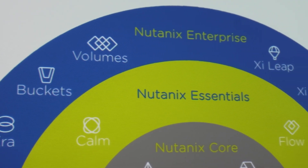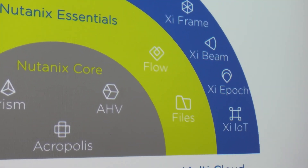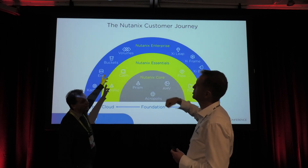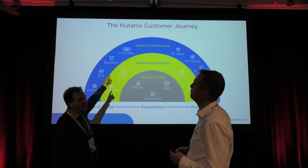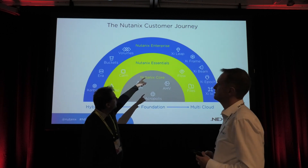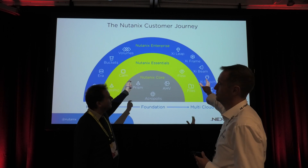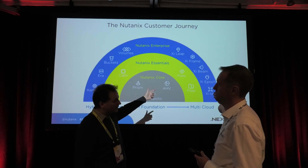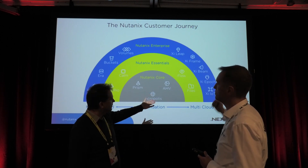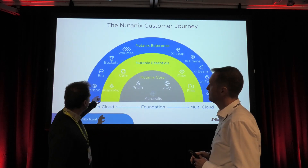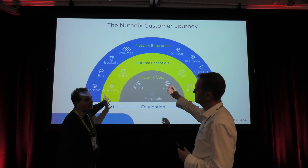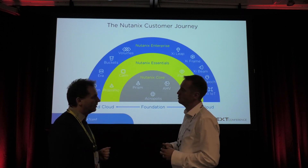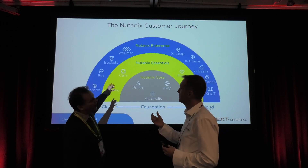Now let's map those services to Nutanix product names. Karbon is containers. Era is databases as a service. Objects is object storage. Volumes is block storage — the SAN solution. Leap is disaster recovery. Everything with 'Xi' is cloud-related: Xi Leap is disaster recovery, Xi Frame is VDI as a service. Beam is cost and compliance. Epoch is application mapping. For IoT, there's the Internet of Things solution. The essentials layer includes Prism Pro with a single pane of glass for managing multiple clusters around the world.